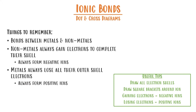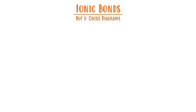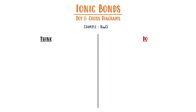Let's take a look at an example — here's sodium chloride. As usual, we're going to split this into things we're going to think about and things we'll do. The first question we ask ourselves is: what elements are present? Well, we have sodium and chlorine.